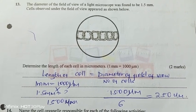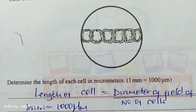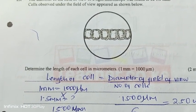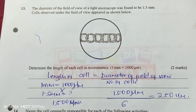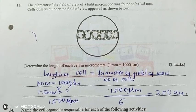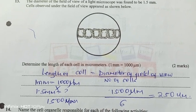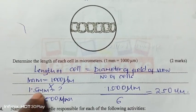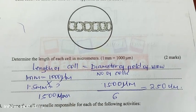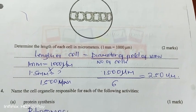The diameter of the field of view of a light microscope was found to be 1.5 mm and 6 cells were observed. To determine the length of each cell in micrometres: convert 1.5 mm to 1,500 micrometres, then use the formula — length of cell equals diameter of field of view divided by number of cells. That gives 1,500 ÷ 6 = 250 micrometres. The organelle responsible for protein synthesis is the ribosome; for transport of lipids, the smooth endoplasmic reticulum.